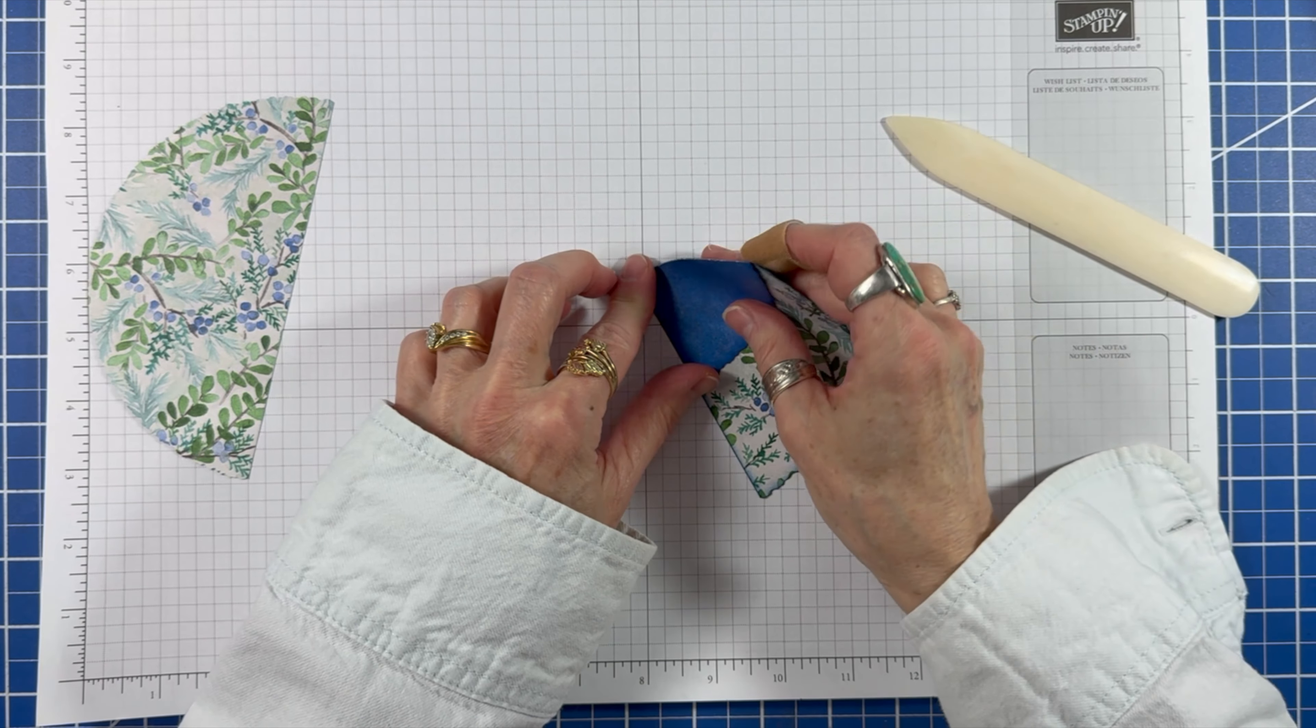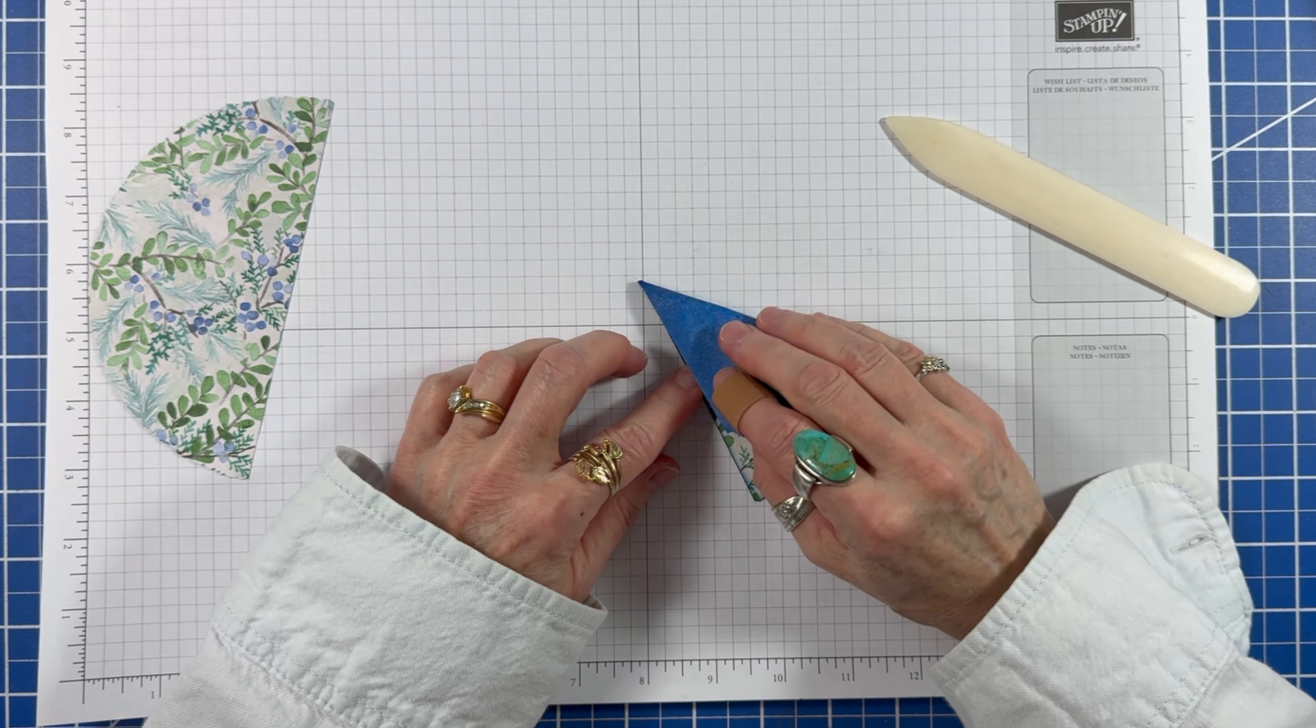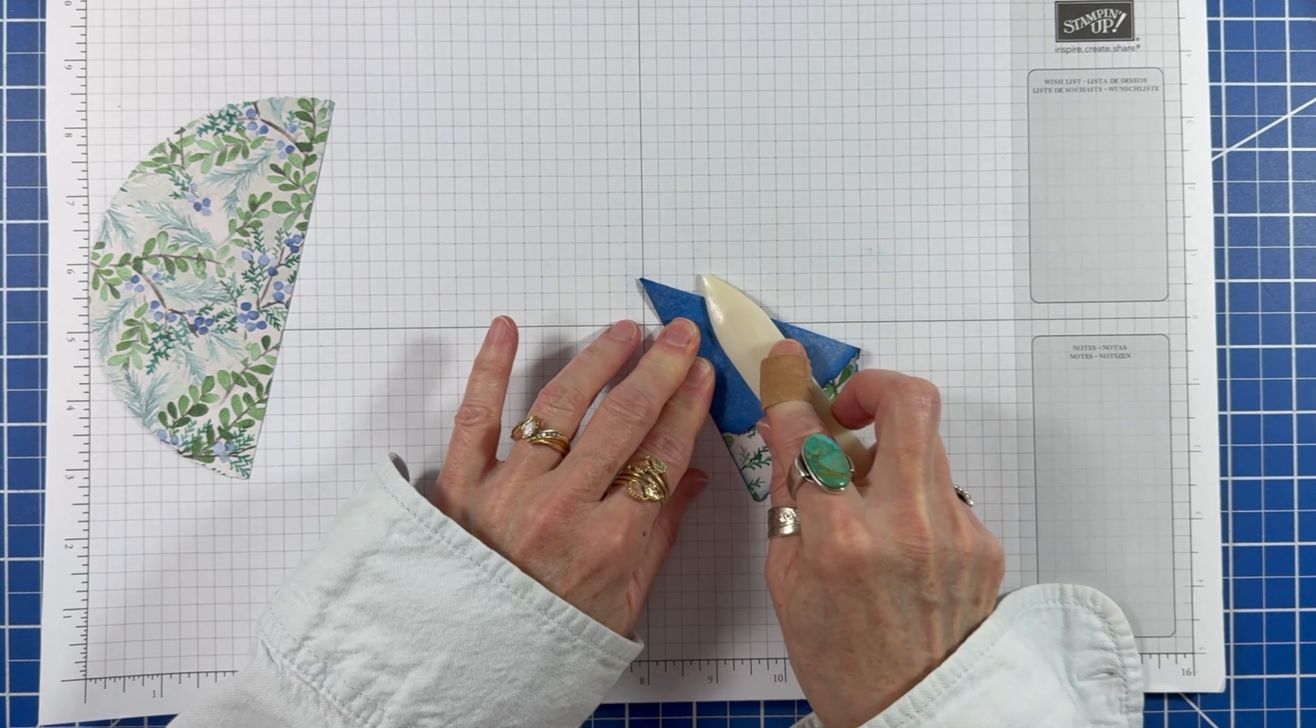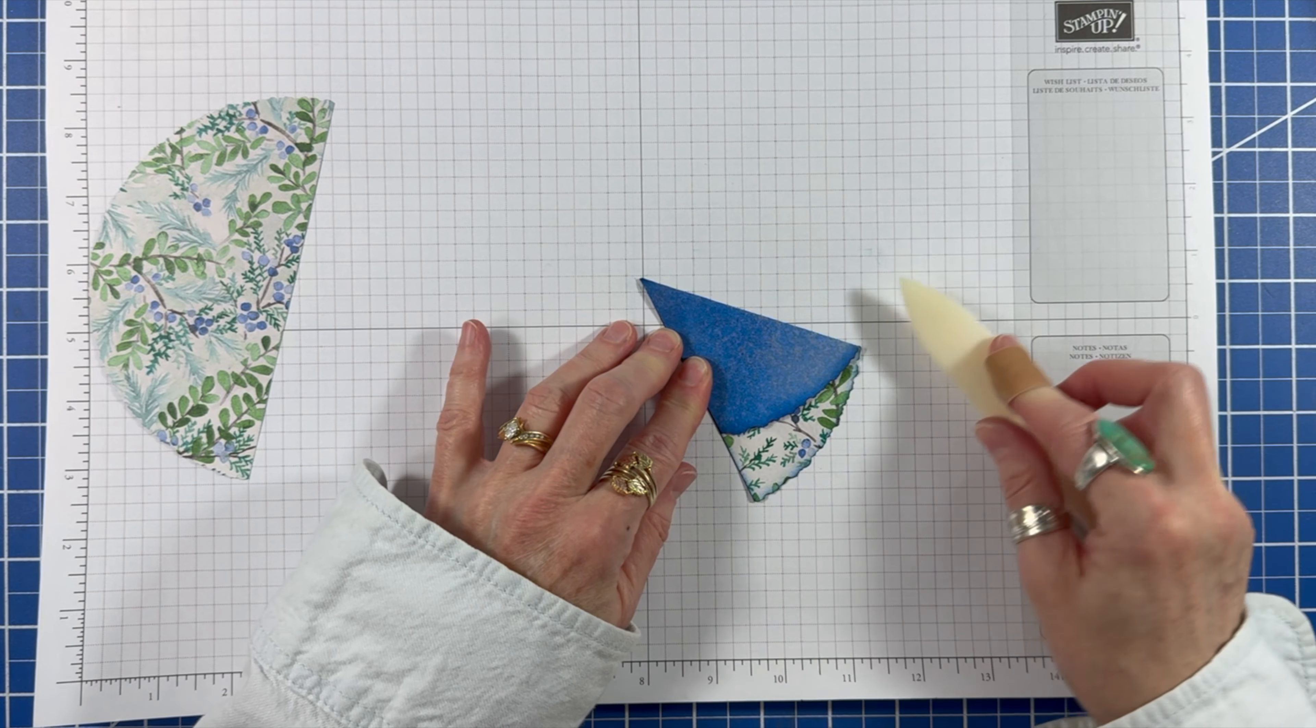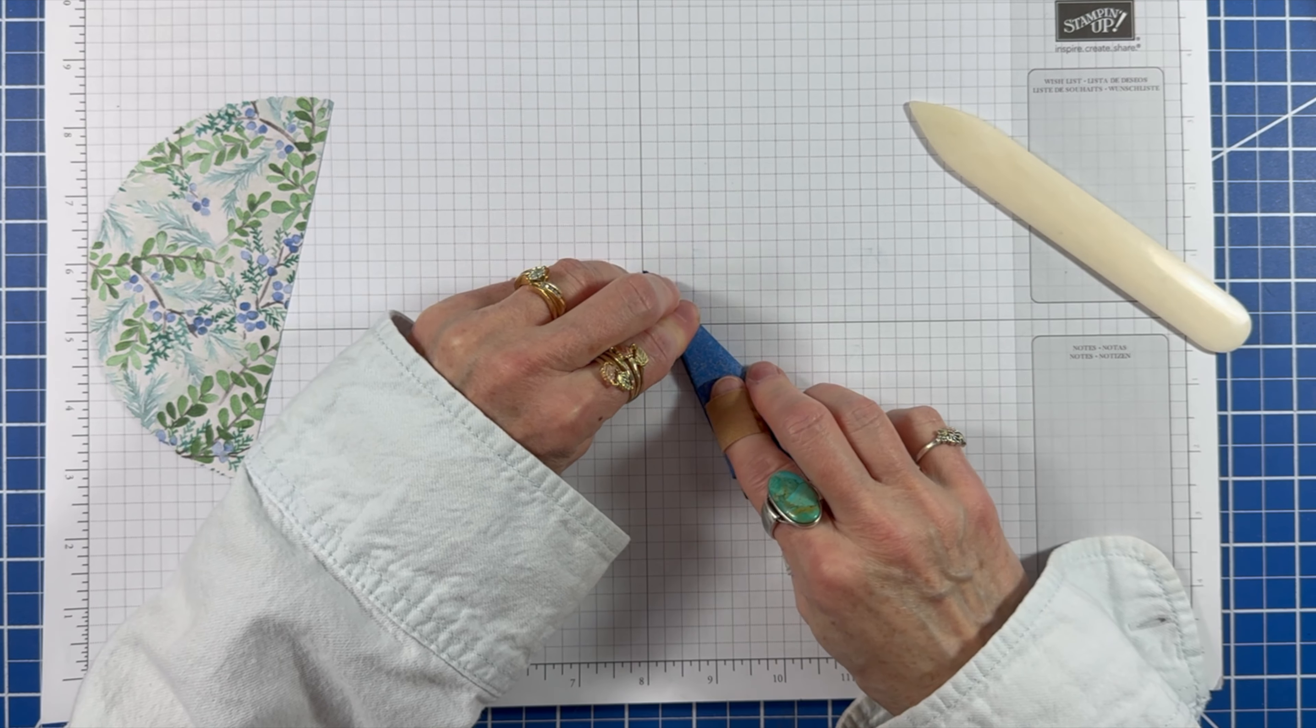Pull this new fold towards the cut edge. And burnish this fold. And pull this fold towards the cut edge. Try to keep the point sharp.